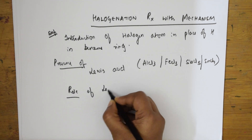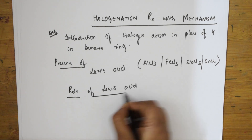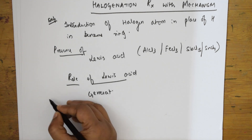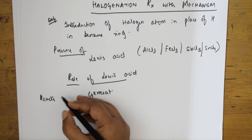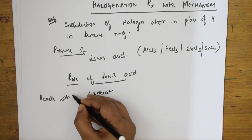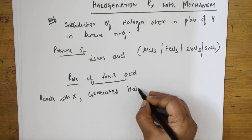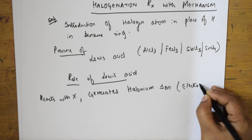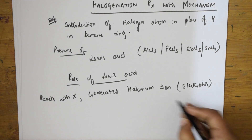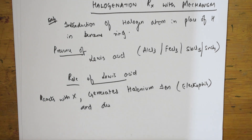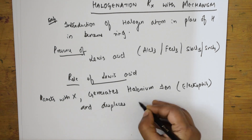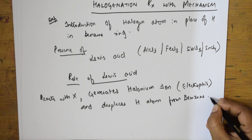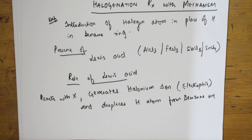The role of the Lewis acid: it reacts with the halogen molecule X2 and generates a halonium ion. This halonium ion acts as an electrophile, and it then displaces a hydrogen atom from the benzene ring.